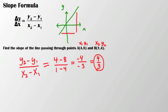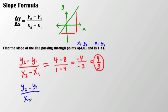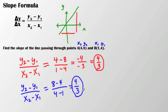Here's an interesting question: what if I swap the coordinates, so that (4, 8) is (x₁, y₁) and (1, 4) is (x₂, y₂)? Starting again with y₂ minus y₁ over x₂ minus x₁, I get 8 minus 4 over 4 minus 1, which is positive 4 over 3 — still the same answer. So regardless of which point you label as coordinate 1 or coordinate 2, you're still going to get the same answer. And that is how you use the slope formula.